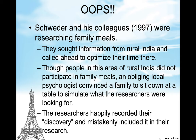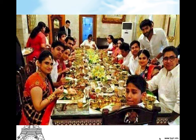Schweder and his colleagues in 1997 were researching family meals. They sought information from rural India and called ahead to optimize their time there. Though people in this area of rural India did not participate in family meals, an obliging local psychologist convinced a family to sit down at a table to simulate what the researchers were looking for. The researchers happily recorded their discovery and mistakenly included it in their research. This is what they showed — of course, Indians don't do this.